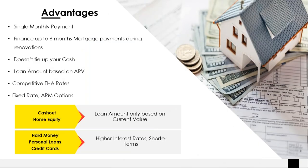Let's talk about the advantages of a 203K. There's just one single monthly payment, so your renovations and your first mortgage are all rolled into one payment. We can also finance in up to six months of mortgage payments during renovations. So if you're doing work where the home will be uninhabitable during the period of renovations, we don't want your borrower to pay rent somewhere else and pay a mortgage at the same time. We'll allow them to roll in up to six months of mortgage payments. Another great advantage is that the borrower doesn't have to tie up their cash — they can finance in the dollar amount to do their new kitchen and use their cash on another investment.